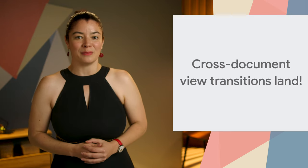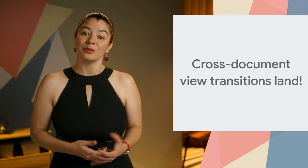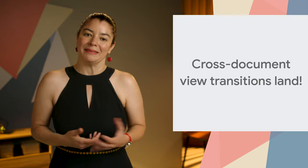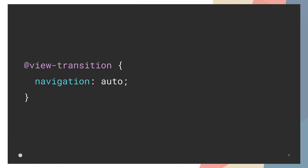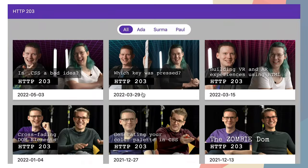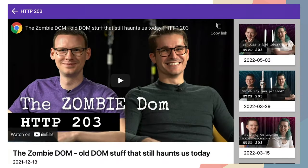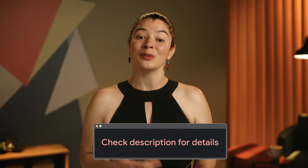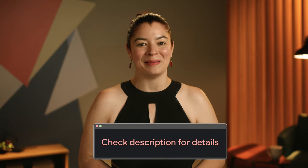To implement a cross-document view transition, both ends need to opt in. To do this, use the View Transition at-rule and set the navigation descriptor to auto. Cross-document view transitions use the same building blocks and principles as same-document view transitions. Visit the link in the description to learn more about the View Transitions API.